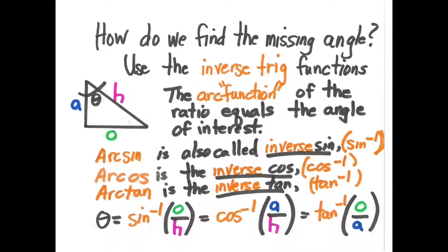Usually they're the second function underneath the sine, cosine, and tangent buttons. All that means is that when you know the ratio between two sides — for example, the opposite divided by the hypotenuse — the arc sine gives you the angle, and every triangle with that ratio will have the same angle. You can also use adjacent divided by hypotenuse for the inverse cosine, or if you just have the opposite and adjacent, you can take the inverse tangent of that ratio to get the angle of interest.